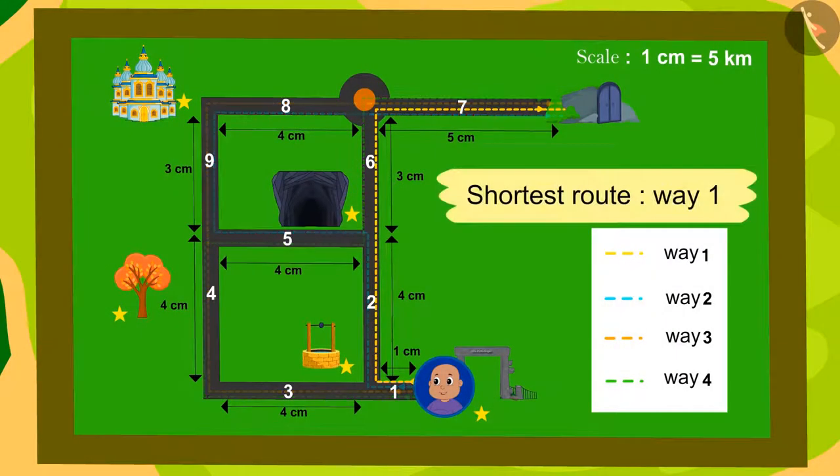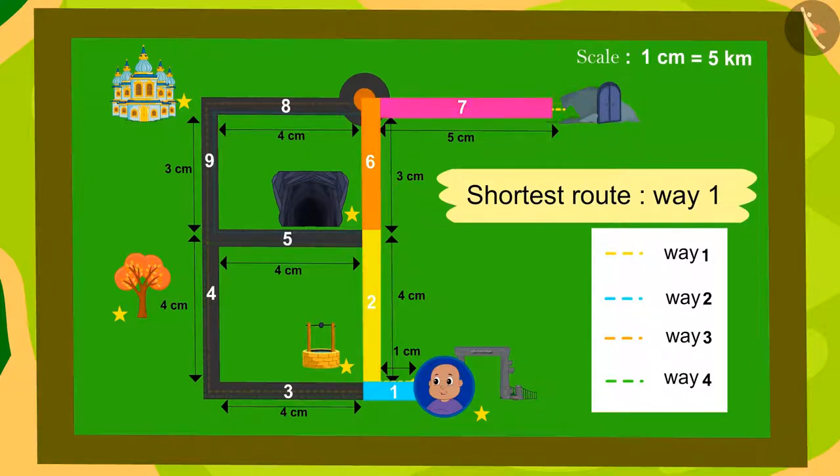Yes, by using way 1, we can take Bablu out of the village of Ulta Pulta by the shortest route. We add the length of these 4 roads. How many centimeters will we get? 13 centimeters.